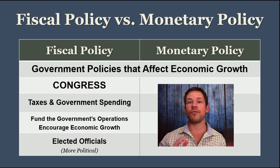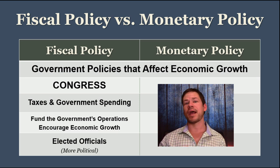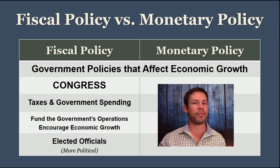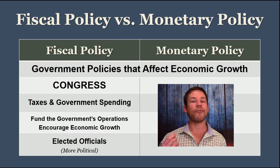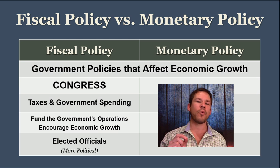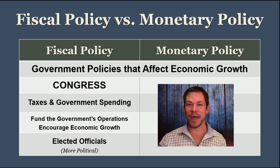One thing to note about fiscal policy is that it is set by elected officials in Congress, so it's definitely something that's political. For example, recently President Trump and the Republicans in Congress passed a tax plan — they passed tax cuts — and this was a Republican priority and part of what they ran on. Politicians run with specific plans for fiscal policy. Another politician may run on a promise for a balanced budget, where Congress works toward taking in more tax revenue than it spends.